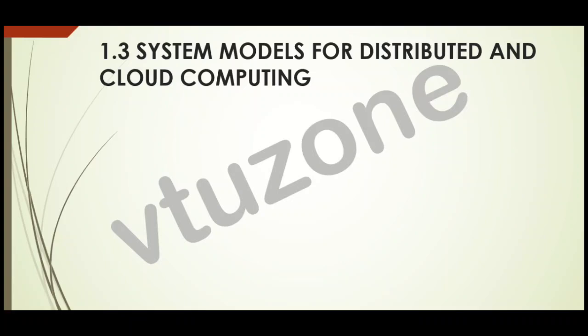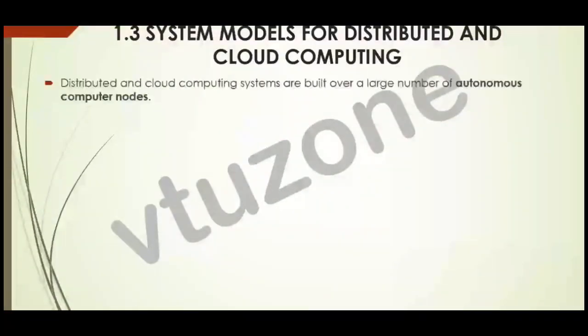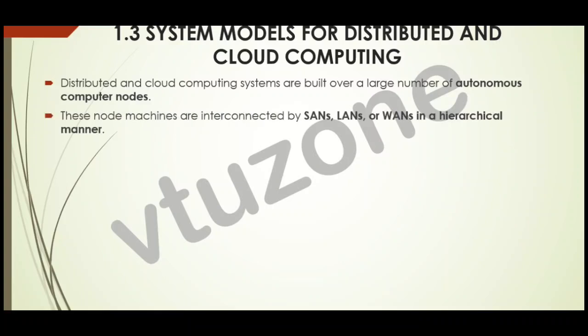Welcome to the cloud computing series. Today we'll be learning about system models for distributed and cloud computing. Distributed and cloud computing systems are built over a large number of autonomous computer nodes — these systems are made up of many independent computers working together. These machines are interconnected by LANs or WANs in a hierarchical manner, connected in layers using networks like local area network, storage area network, or wide area network.